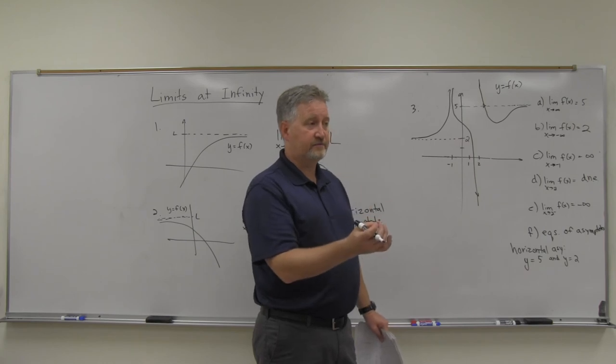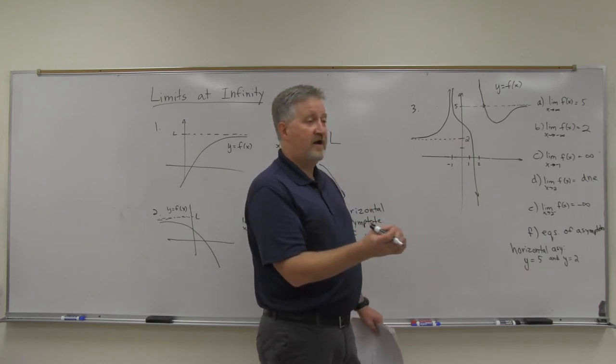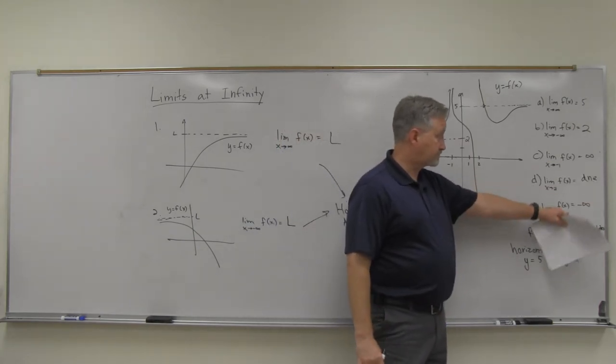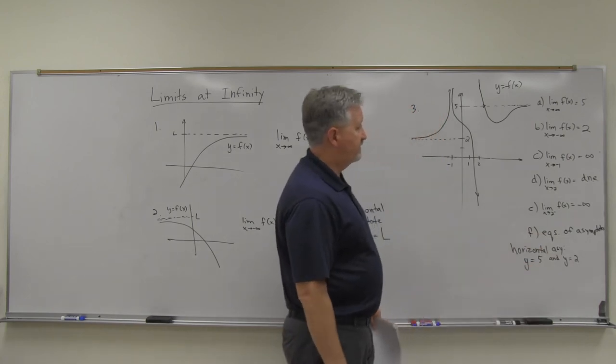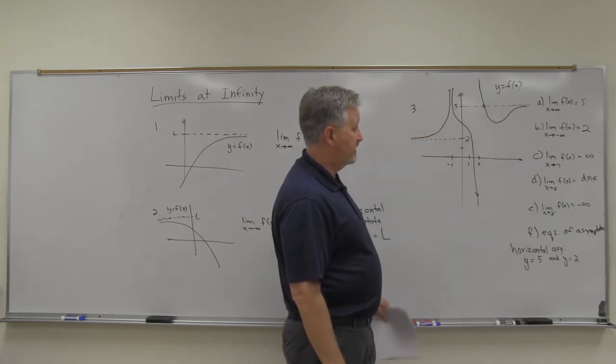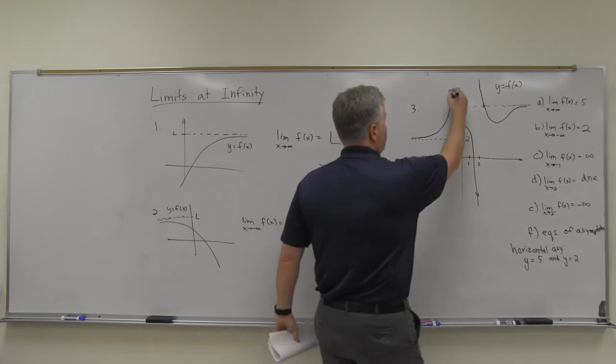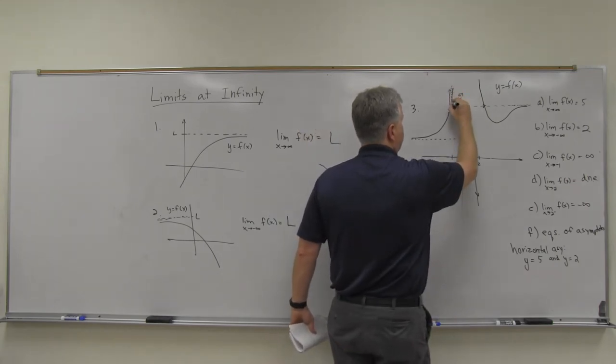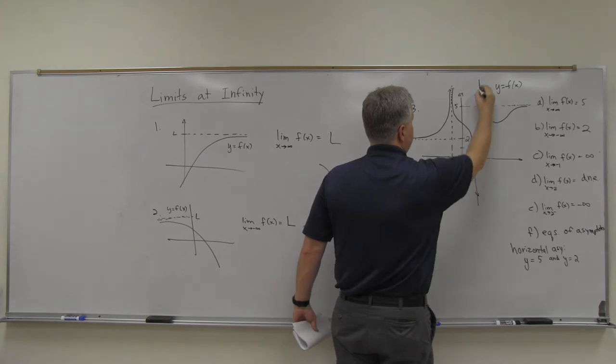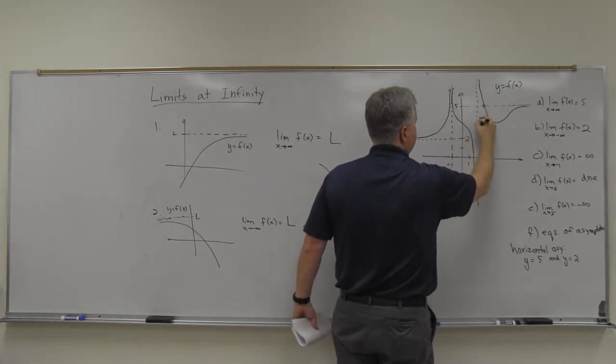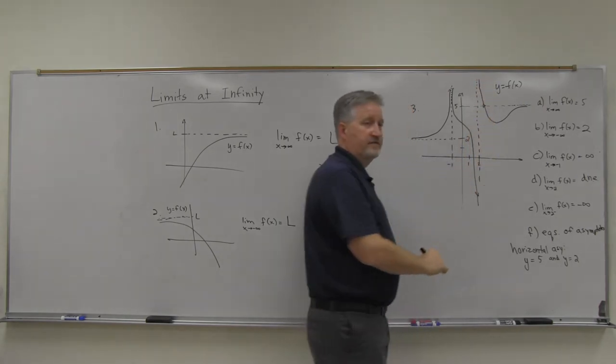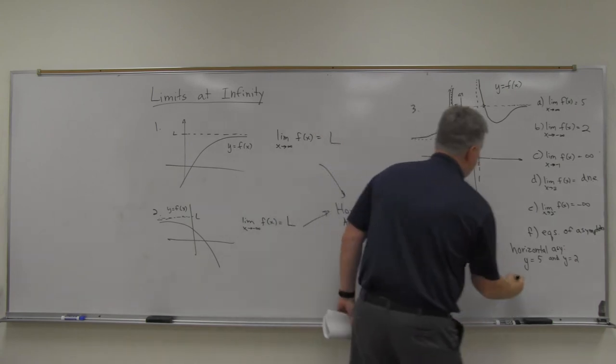But because of the other structure of this thing, where I have these infinity or negative infinity, the limit's equal to those, those are vertical asymptotes, aren't they? I didn't draw them in here, but you've also got at these infinite limits, you've got these vertical asymptotes. So there's two vertical asymptotes as well.